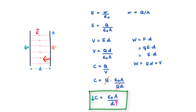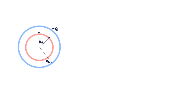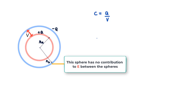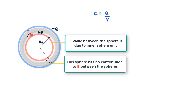Now let us derive the capacitance of a spherical capacitor — two concentric spheres with inner radius Rₐ and outer radius R_b. The inner sphere has charge +Q and the outer one has charge −Q. By the formula C = Q/V, the problem reduces to finding the potential difference V between the spheres. The charge on the outer sphere has no contribution to the electric field inside it, so the electric field and potential at any point between the spheres is due to the inner sphere only.